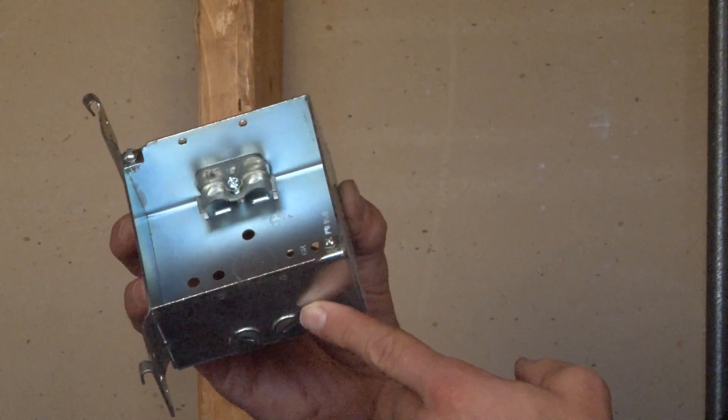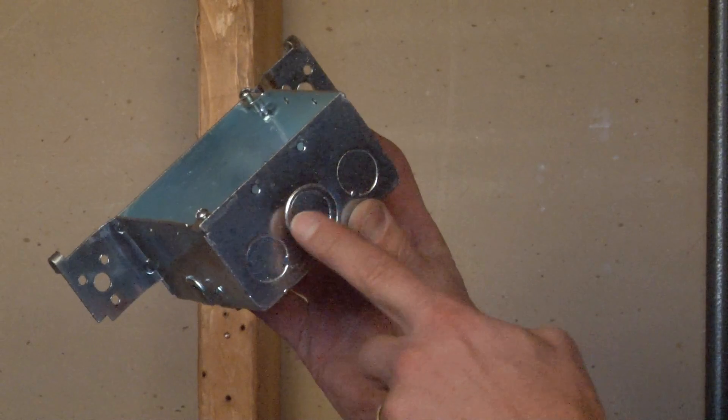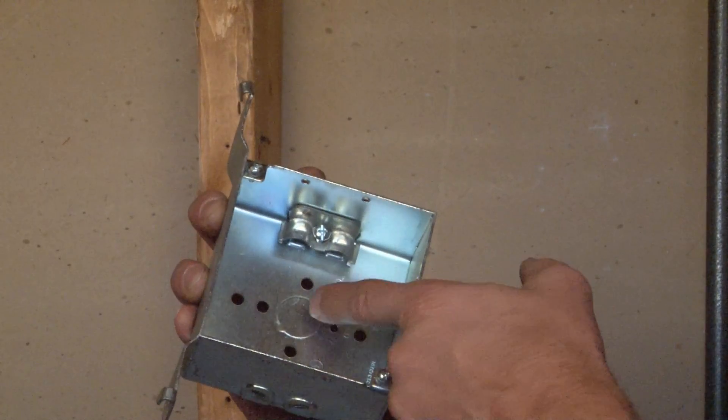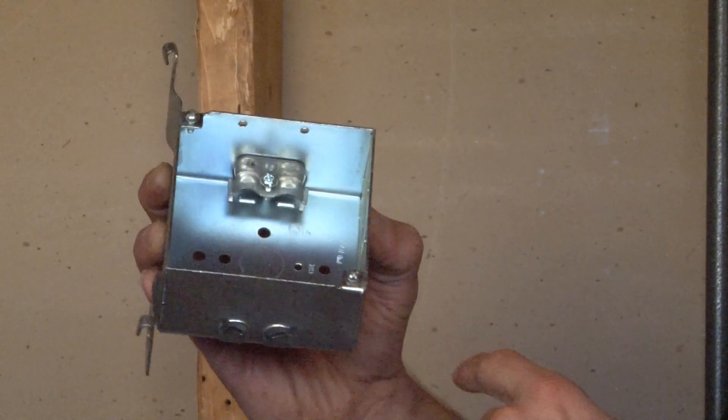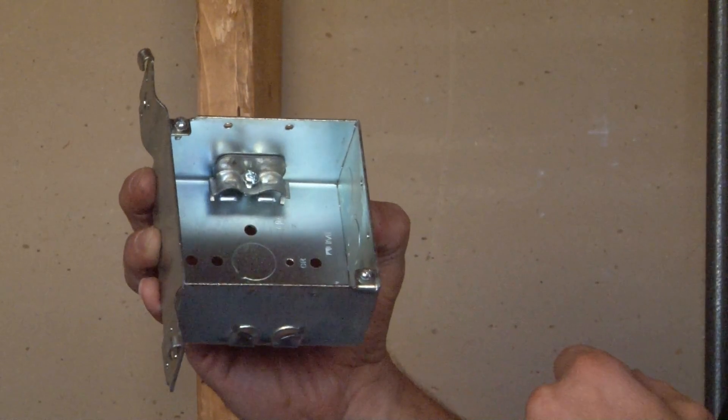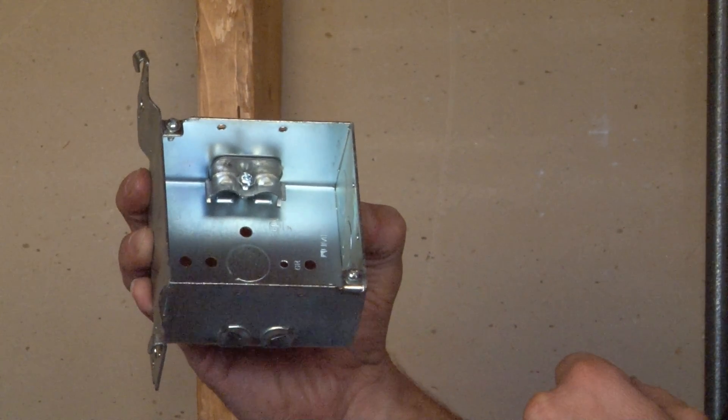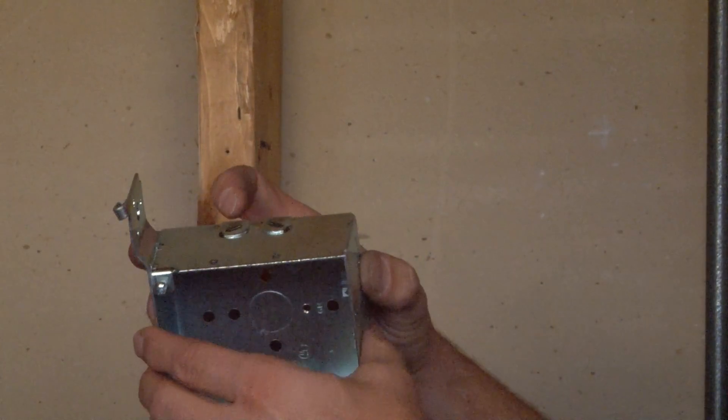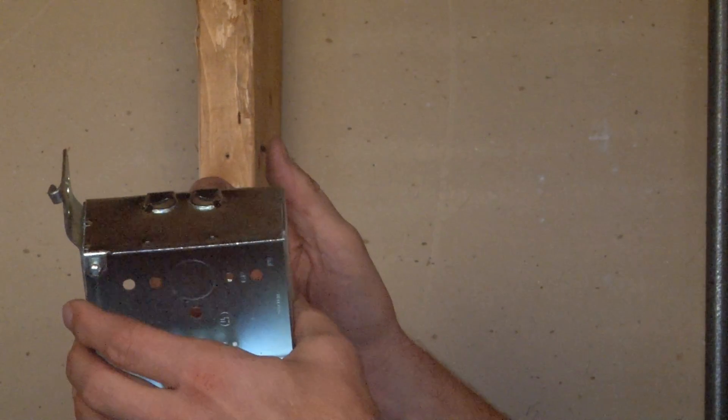This particular box accommodates both 1⁄2 and 3⁄4 inch conduit in the bottom and one of the sides, but it also has pre-assembled clamps for non-metallic sheath cable installation.